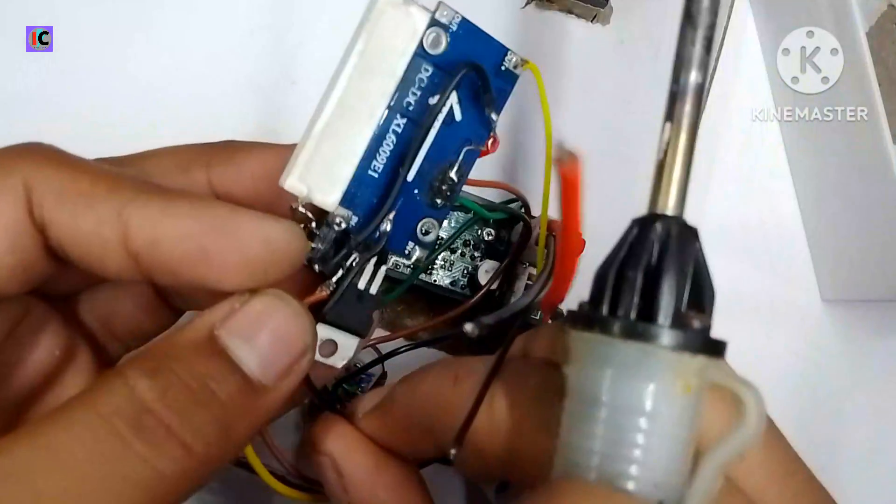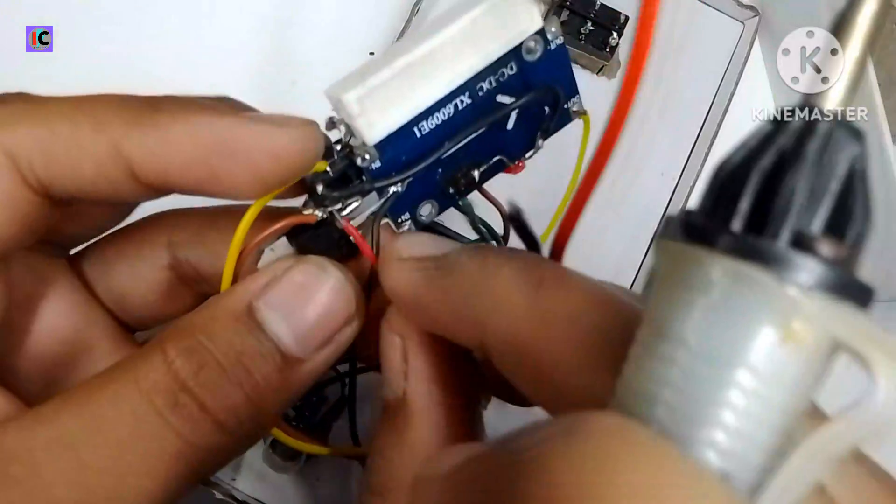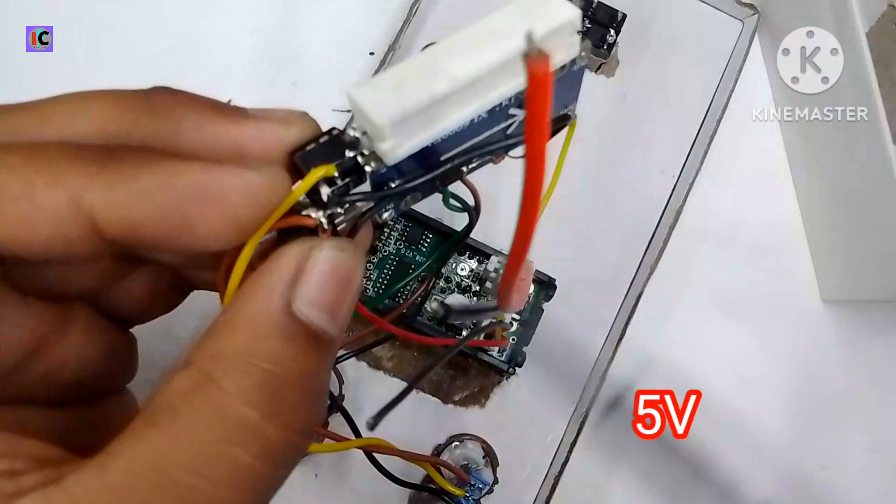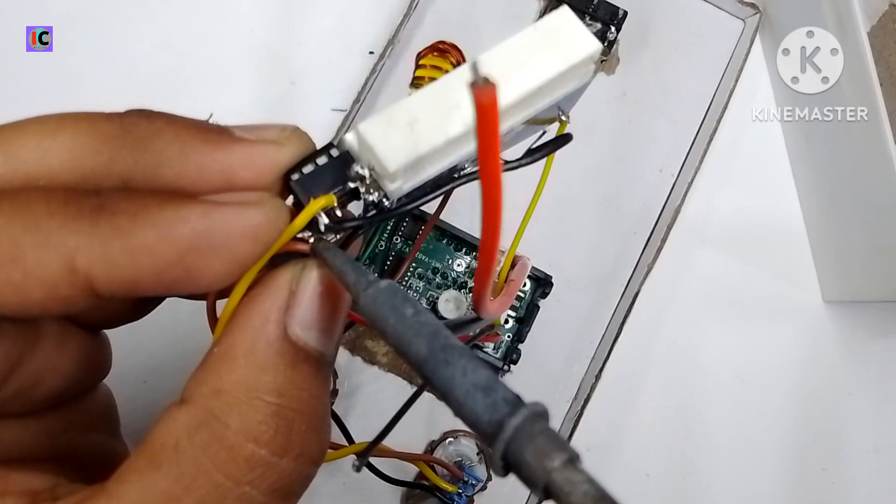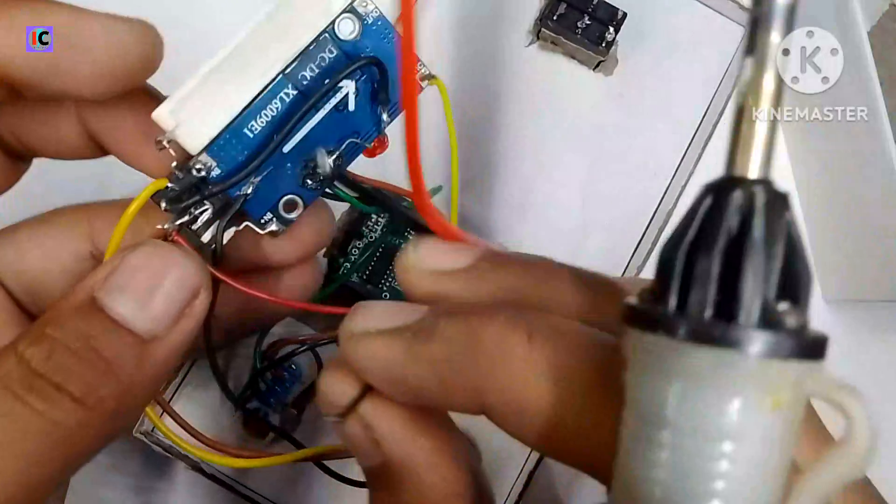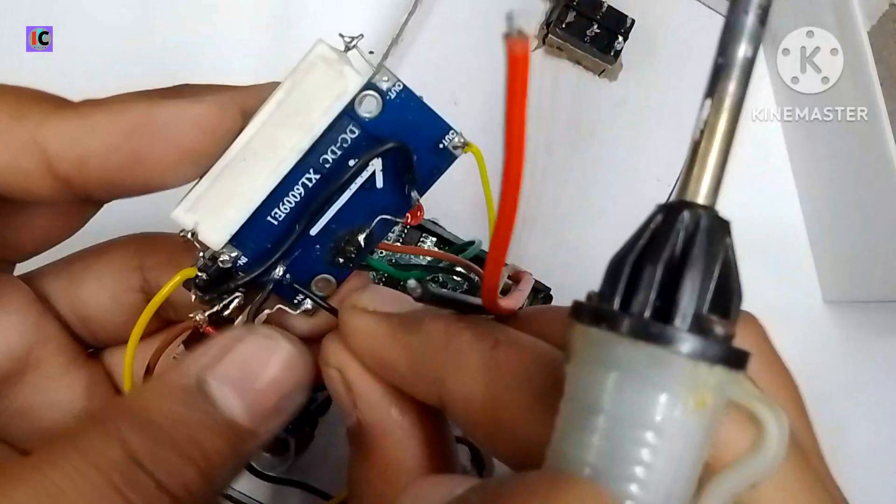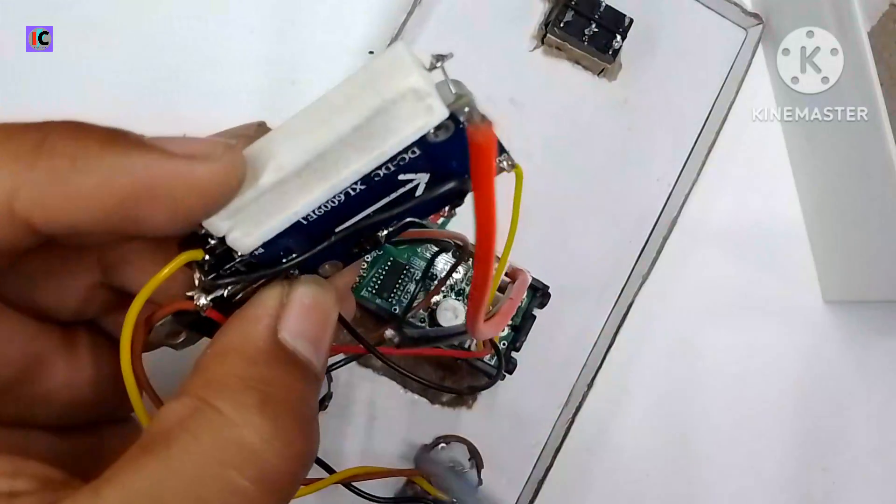And this is the 5 volt power for the voltage ampere meter which is connected at the LM7805 regulator IC output. And this is the common ground for all the circuit.